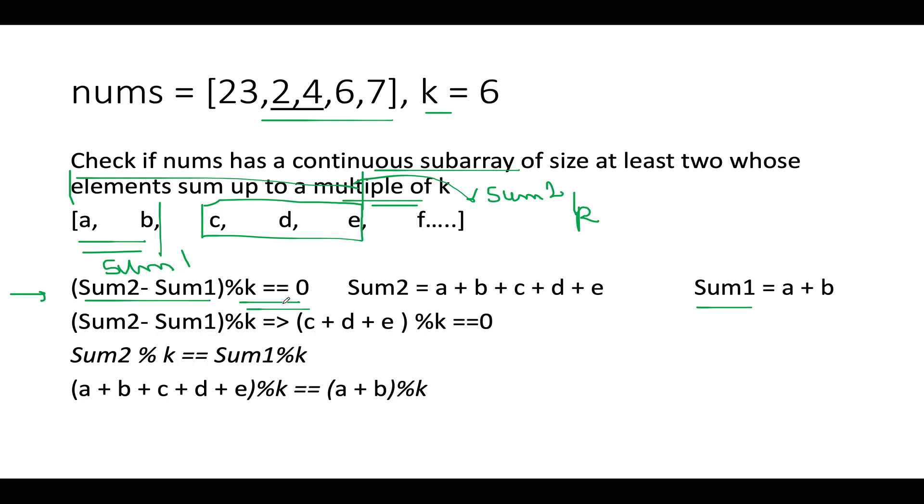We need to check whether sum2 minus sum1 modulus k gives you the value 0 or not. So if I represent this mathematically then sum2 is a plus b plus c plus d plus e. Sum1 is a plus b. I subtract sum1 from sum2.